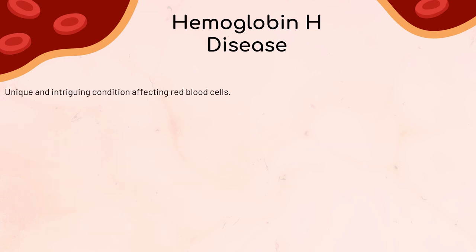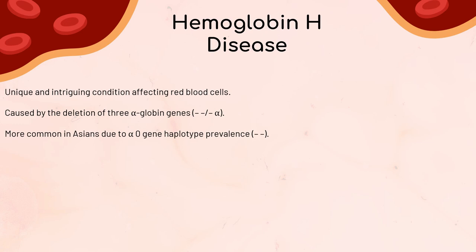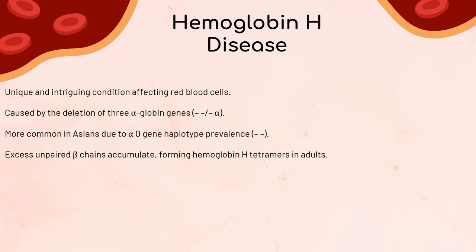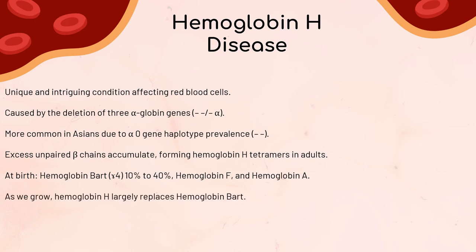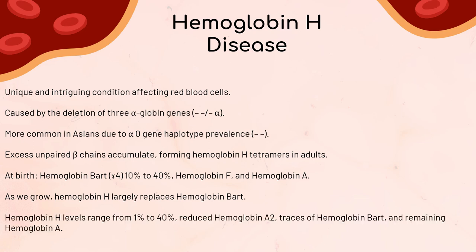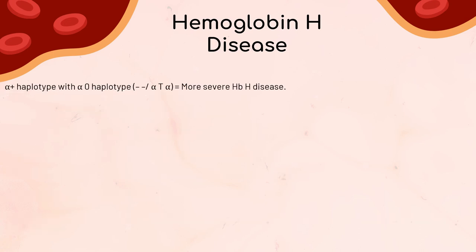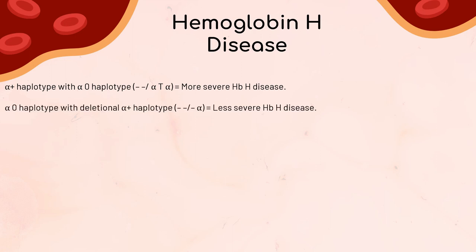Hemoglobin H disease is caused by the deletion of 3 alpha-globin genes, leaving only 1 functional alpha-globin gene (-- / -alpha). This condition is more common in Asians, mainly due to the prevalence of the alpha-0 gene haplotype. Excess unpaired beta chains accumulate, forming tetramers of hemoglobin H in adults. At birth, hemoglobin BART makes up around 10% to 40% of hemoglobin, with the rest being hemoglobin F and A. As we grow, hemoglobin H largely replaces hemoglobin BART, leading to Hb H levels from 1% to 40%, along with reduced hemoglobin A2, traces of BART, and remaining hemoglobin A. The non-deletional alpha-plus haplotype combined with alpha-0 (-- / alpha-T-alpha) usually leads to a more severe form compared to the deletional alpha-plus interaction (-- / -alpha).